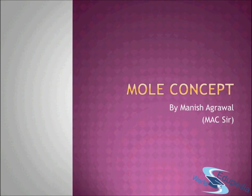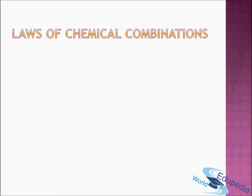Before we start with the topic of mole concept, you need to know how compounds are formed. There are certain laws called laws of chemical combination. According to these laws, compounds are always formed by constituting elements in order of some constraints. One by one we will go through those constraints. Let's start with the first law of chemical combination called law of conservation of mass.